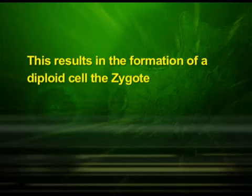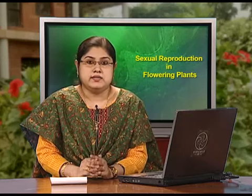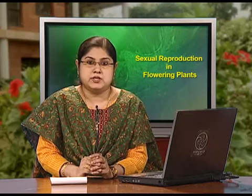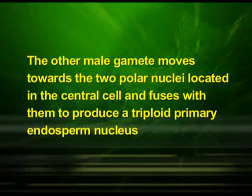This results in the formation of a diploid cell, the zygote. The other male gamete moves towards the two polar nuclei located in the central cell and fuses with them to produce a triploid primary endosperm nucleus.